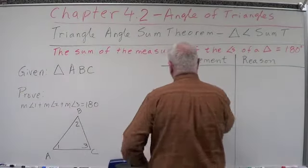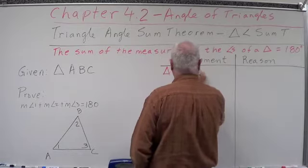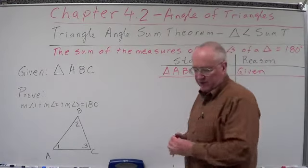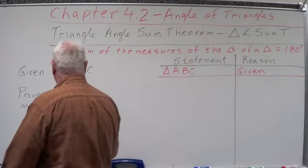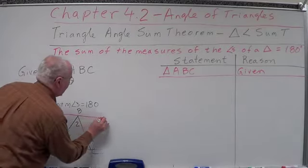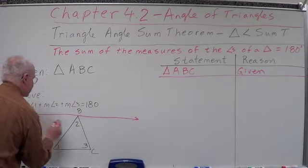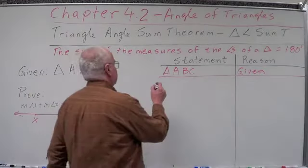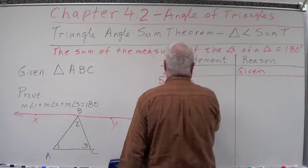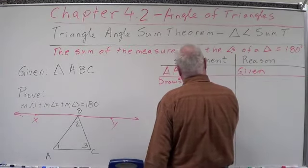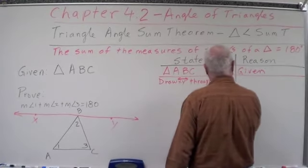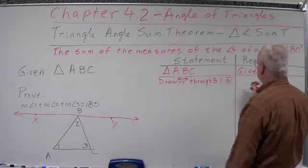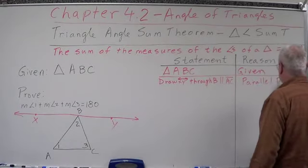Let's get started on this proof. Step 1: we're given triangle ABC — that's given to us. Next, we're going to draw an auxiliary line through B with points X and Y on it, parallel to segment AC. We draw line XY through B parallel to segment AC. We can do that because there's only one such line, by the parallel postulate.